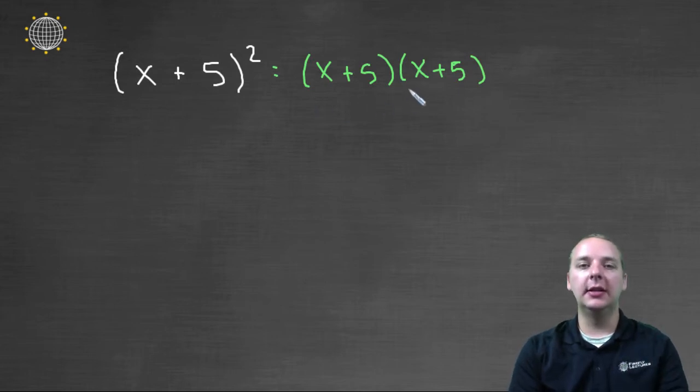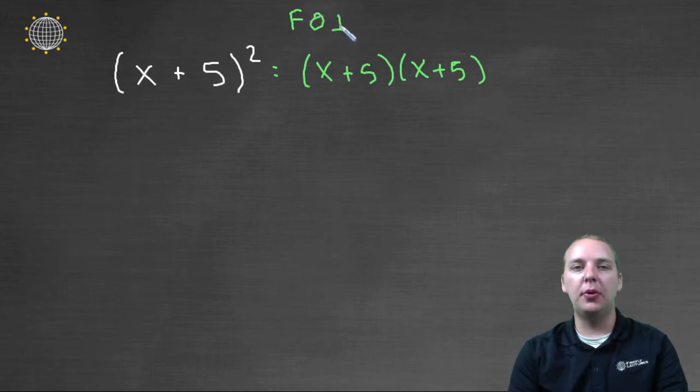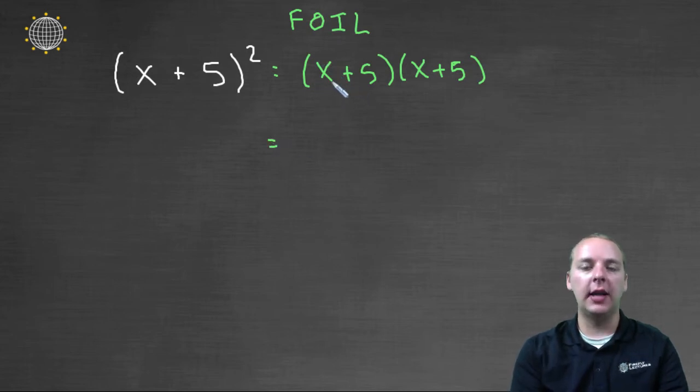And we clearly see that it's, yes it is in fact the FOIL method. But we would need to write it as a product of two binomials first. So anyways, once we have that done, we'll do first, outer, inner, last.